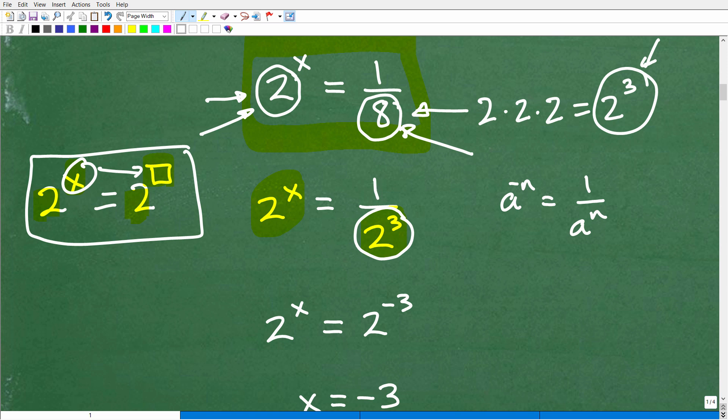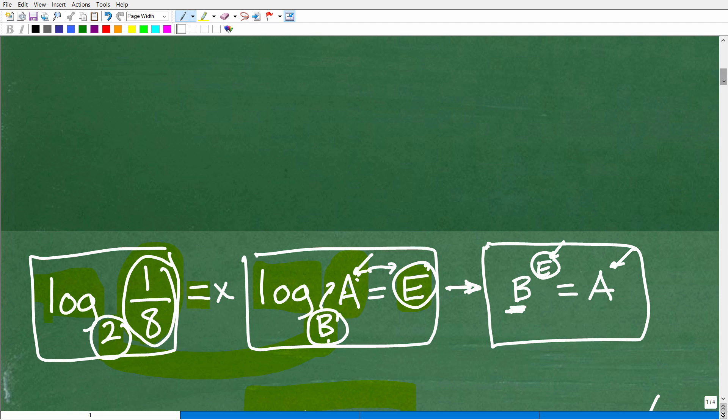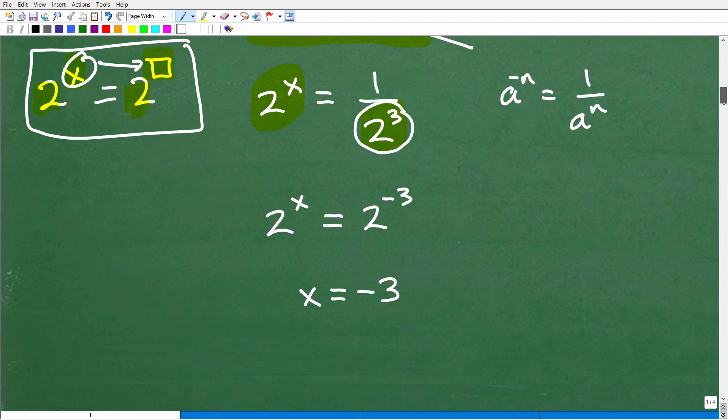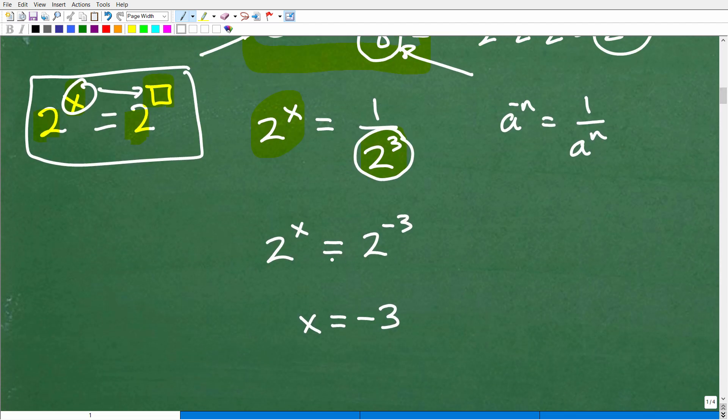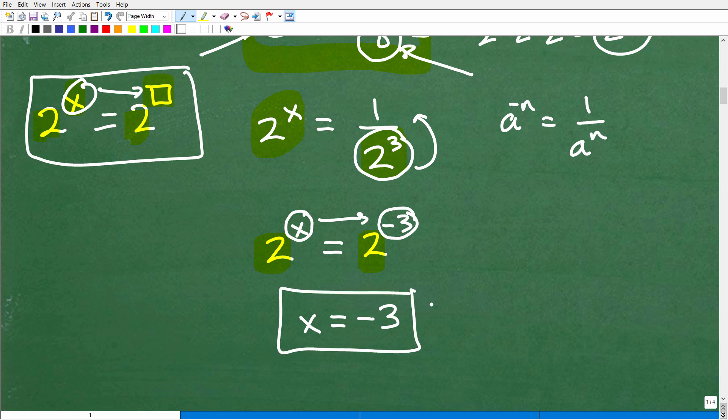So I have this written as a fraction, 1 over 2 cubed. So let's rewrite this such that we can get the bases the same. So I'm going to move this up. And when I do that, the power goes from positive to negative. So 2 to the x is equal to 2 to the negative 3. Now you can see this is exactly the same, 2 and 2. So if I'm saying 2 to some power x is equal to 2 to the negative 3, it's pretty obvious that x must be equal to negative 3. And this is the solution.